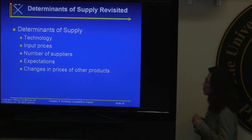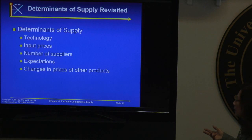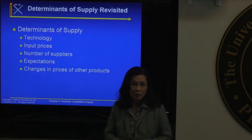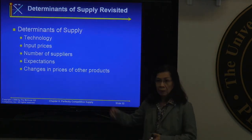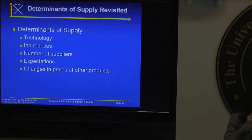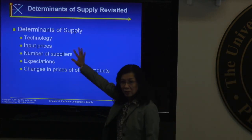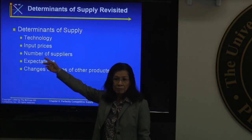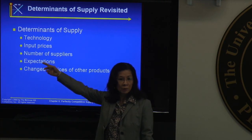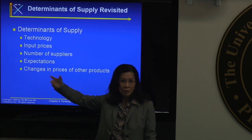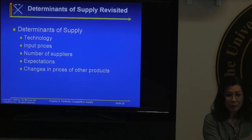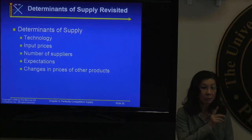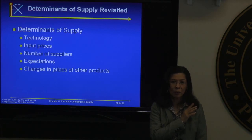What are some of the determinants of the supply curve? That's like going back to Chapter 3 — technology, for example. If there's an improved crop rotation technique, you tend to produce more. If input prices go up, your variable cost goes up, and your supply curve shifts to the left. The number of suppliers also matters — more suppliers shift the supply right. Mergers and acquisitions can reduce suppliers, shifting supply left.